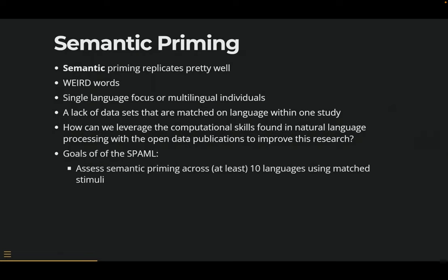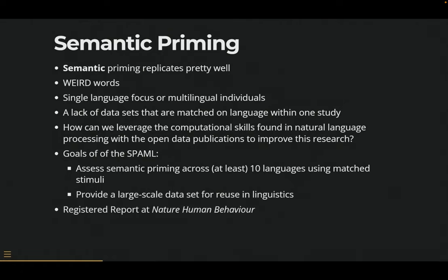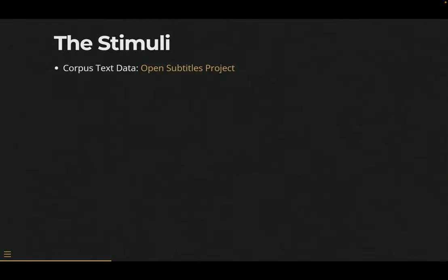The goals for this project are to assess semantic priming across at least 10 languages — that's what NHB wanted, and six are done. We also want to provide a large scale data set for reuse in cognitive psych. This is a registered report at Nature Human Behavior.